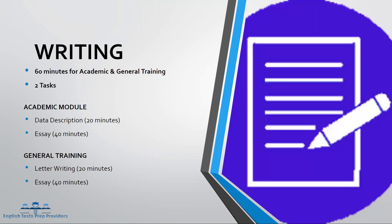Let's move on to the writing subtest. They have different task 1 formats; however, there is a 60-minute time allotment for both academic and general training, and they each have two tasks. For the academic module, task 1 is data description — you are going to interpret graphs, tables, and charts — and you have 20 minutes to do that.